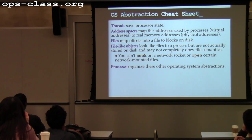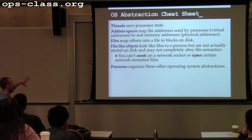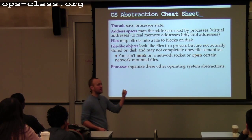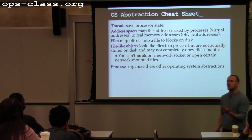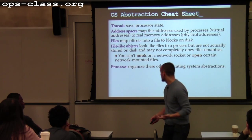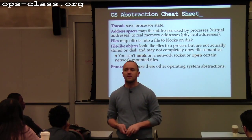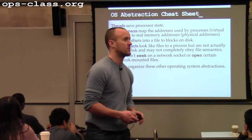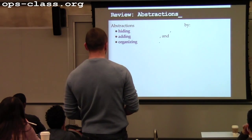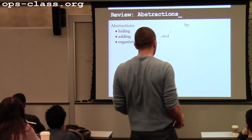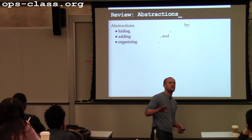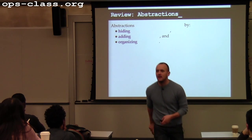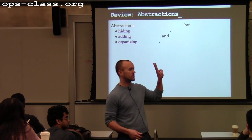Let's go back to Friday and do a little review. We gave you an introduction into some of the OS abstractions we'll be covering for the rest of the term: threads abstracting the CPU, address spaces abstracting memory, files abstracting disk blocks essentially. And we started to talk about processes which organize and bring together some of these other abstractions. But why do we even have these abstractions in the first place? What do abstractions do — three things.